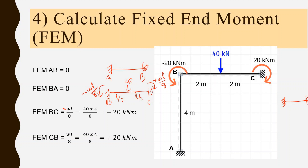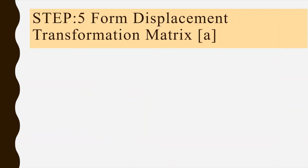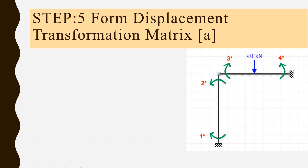Step 5 is to form the displacement transformation matrix. To do this, we need to know the displacement at each element coordinate due to the system coordinate. We have only one system coordinate, so we provide a unit displacement at joint B.